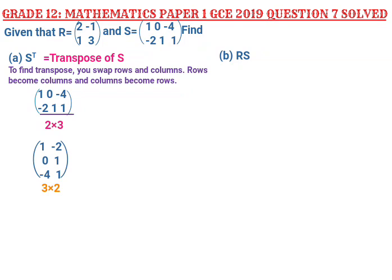Now let's go to question 7B, which says find RS. In short, they are asking us to multiply two matrices. Let me write the two matrices down first. These are the two matrices we are asked to multiply.